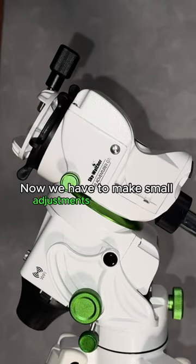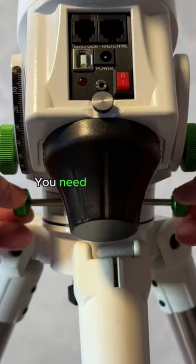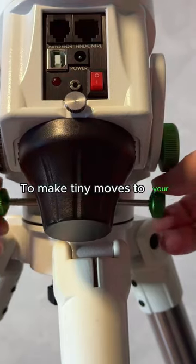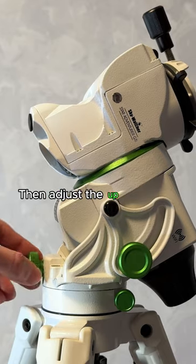Now we have to make small adjustments to the mount so we can get good polar alignment. You need to adjust the azimuth and the altitude knobs to make tiny moves to your mount. I recommend to find right and left first, then adjust the up and down.